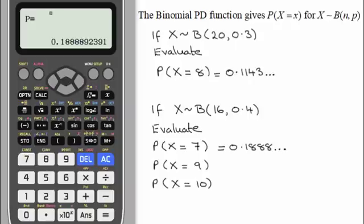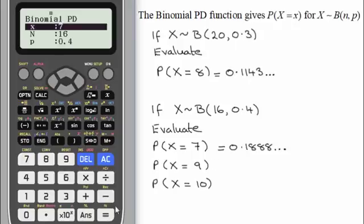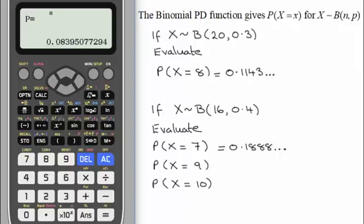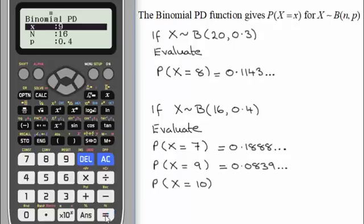Now obviously I could go back and do much the same again for the probability that x equals 9 by pressing equals and just simply entering the 9 there. n and p would be exactly the same as we had before. So if I press equals, that sets that, press equals again, and we've got the probability that x equals 9. So I'll put that in, as you can see, it's 0.0839 and so on. And again, I could do much the same for 10, but I'm going to show you a quicker way for something like this in a moment.